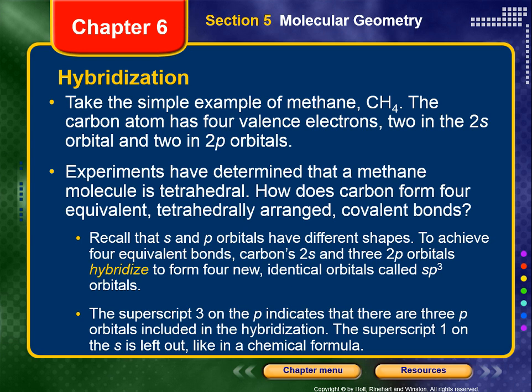Let's take the simple example of methane (CH4): central carbon with four hydrogens, all singly bonded. Carbon comes to the table with four valence electrons — two in its 2s orbital and two in its 2p orbital. But experiments have determined that a methane molecule is tetrahedral. How does carbon form four equivalent tetrahedrally arranged covalent bonds if there are only two electrons in its 2p orbitals?